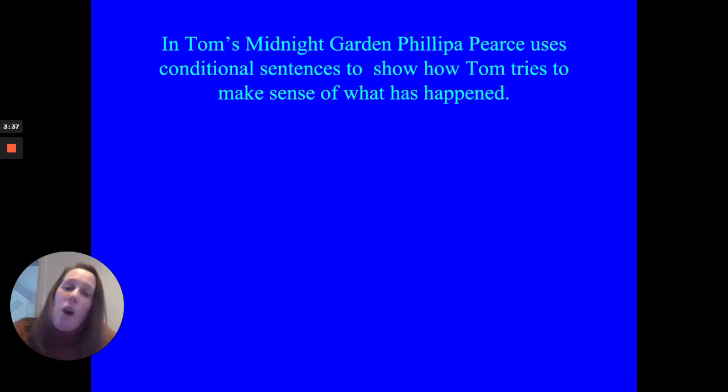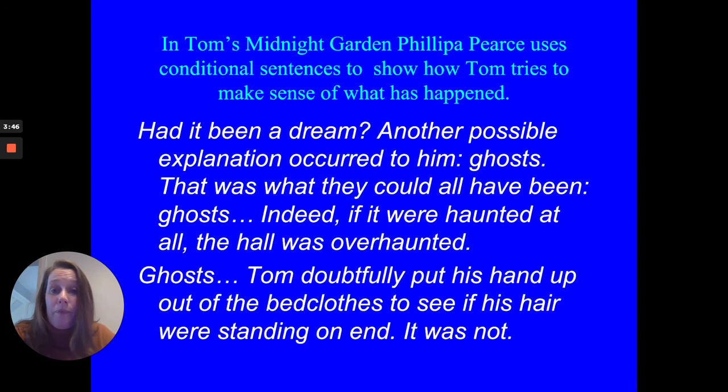Moving on. In the book Tom's Midnight Garden, author Philippa Pearce uses conditional sentences to show how Tom tries to make sense of what has happened. Had it been a dream? Another possible explanation occurred to him. Ghosts. That was what they could have all been. Indeed, if it were haunted at the hall, it was over haunted. Tom doubtfully put his hand up out of the bedclothes to see if his hair was standing on end. It was not.